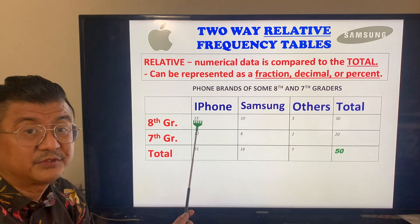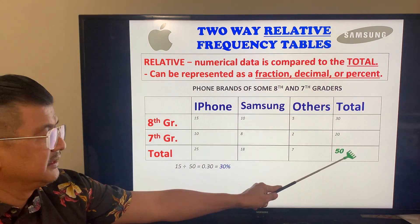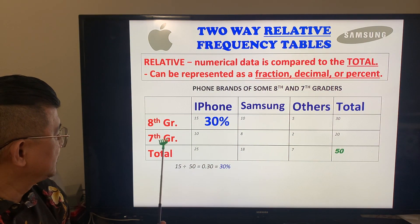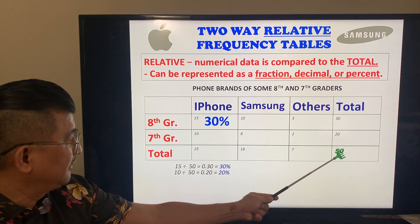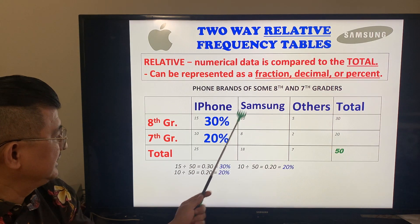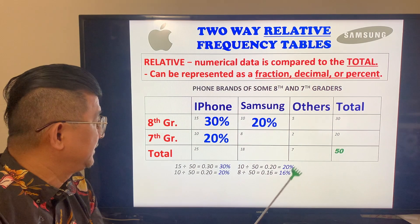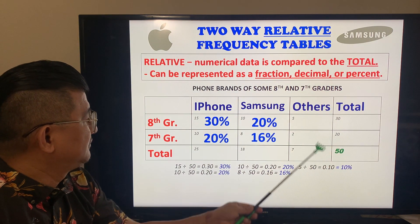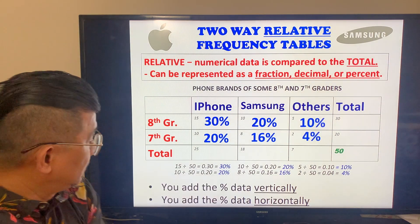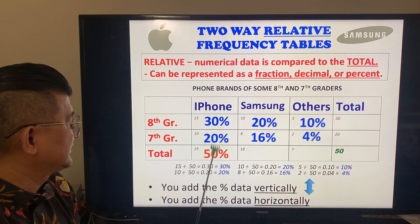So how do I relate the result of 15? I want it as a percent. I do 15 divided by 50 and get 0.30 — that becomes 30%. For 7th graders, 10 of them chose Samsung, so 10 divided by 50 gives 0.20 or 20%. For the 8th graders who chose Samsung: 10 divided by 50 is 0.20, that's 20%. 8 divided by 50 is 0.16 or 16%. Then 5 divided by 50 is 10%, and 2 divided by 50 is 0.04 or 4%. Adding vertically: 30 plus 20 is 50%, so 50% of the students have an iPhone.